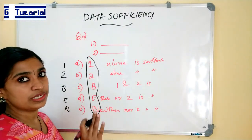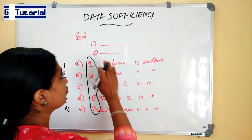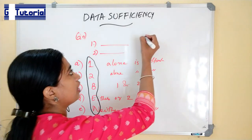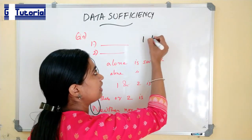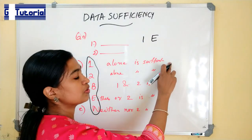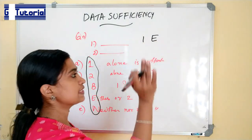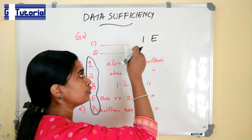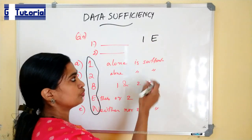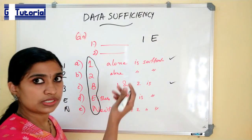First, you have to read the question and just read the first statement. If the first statement can give the answer of the question, then option one or either (E) will be the answer — that is, one alone is sufficient to answer the question, or either one or two. If two also is possible to give the answer, then either one or two. So these two options can be the answer.